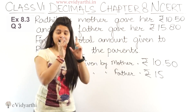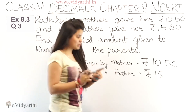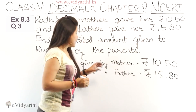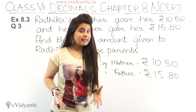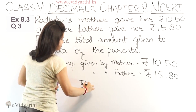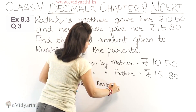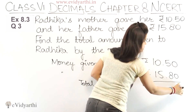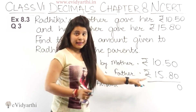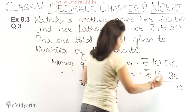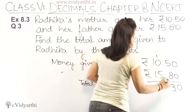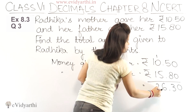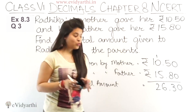We will add these two. Decimal ke neche decimal ko rakhna hai — so 15.80 is placed below 10.50. Aap itne mother ne diya, itne father ne diya, find karna hai total amount. So the total amount will be the sum of both — inko add karte hain. 0 plus 0 is 0. 5 plus 8: 9, 10, 11, 12, 13 — so this is 13, carry 1. 5 plus 1 is 6. Decimal aajayega. And 1 plus 1 is 2. So we have 26.30.